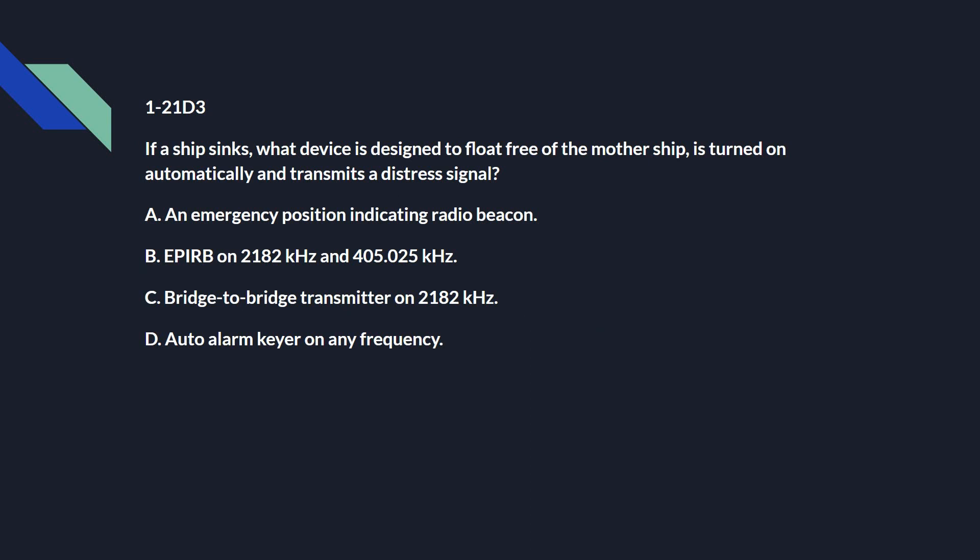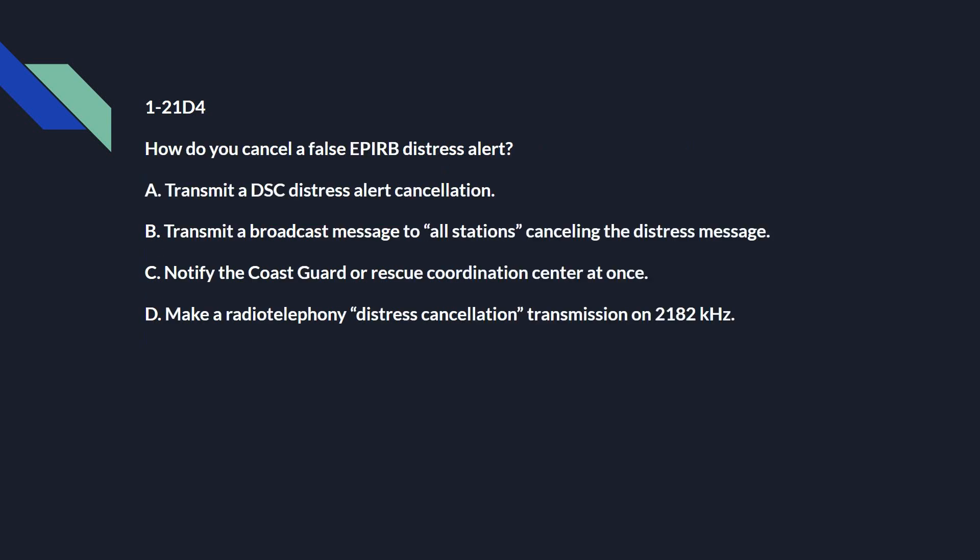1-21 Delta 3: If a ship sinks, what device is designed to float free of the mothership, is turned on automatically, and transmits a distress signal? And that is A: an emergency position indicating radio beacon. 1-21 Delta 4: How do you cancel a false EPIRB distress alert? C: notify the Coast Guard or Rescue Coordination Center at once.